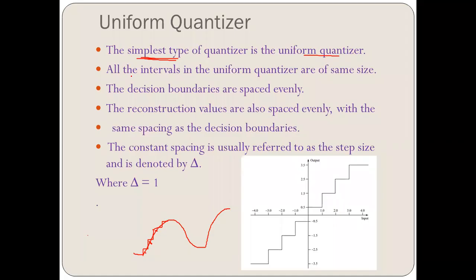In the uniform quantizer, all intervals are of the same size — meaning the spacing between any two intervals is equal. For example, from 0 to 1, 1 to 2, 2 to 3, 3 to 4 — the difference between each interval is 1 at every point. Similarly on the negative side: minus 1 to minus 2 is 1, minus 2 to minus 3 is 1. This uniformity means the size of each interval is equal and constant in the uniform quantizer.